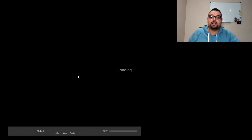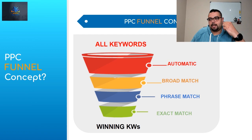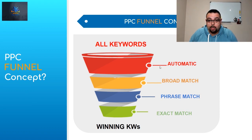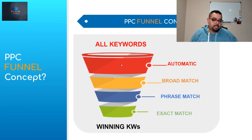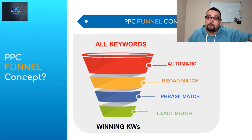So to recap our funnel: the first strategy people use is creating an automatic campaign. The purpose is to let it run and bid a little higher than the suggested bid - you want to go a bit more to find more keywords. Remember the concept: all keywords are out there, we put them in automatic campaign to get the most keywords into our funnel.